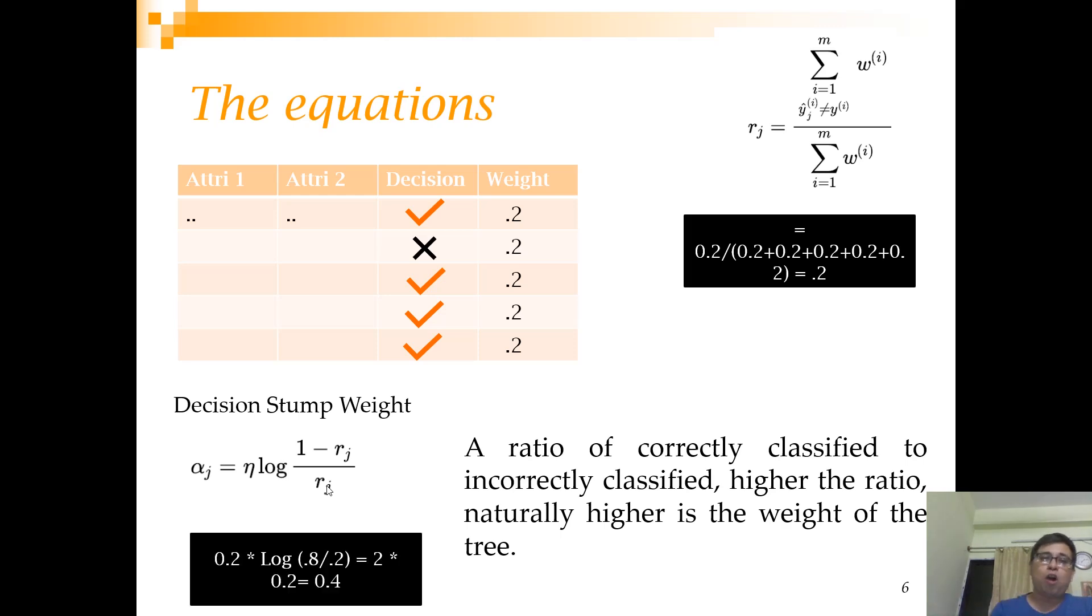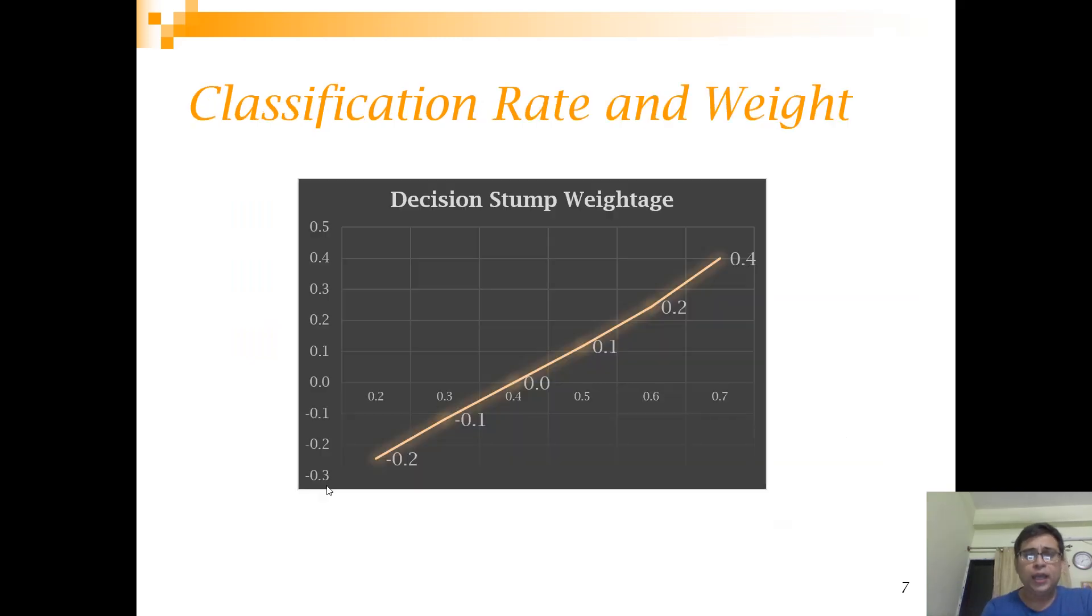If we put the values of 0.8 and 0.2 over here and use an eta value or learning rate of 0.2, we get a decision stump weight of 0.4. So this 0.4 has two uses: one, it will be used to update the observation's weight in the next step, and also it will be used when the final prediction is being done.